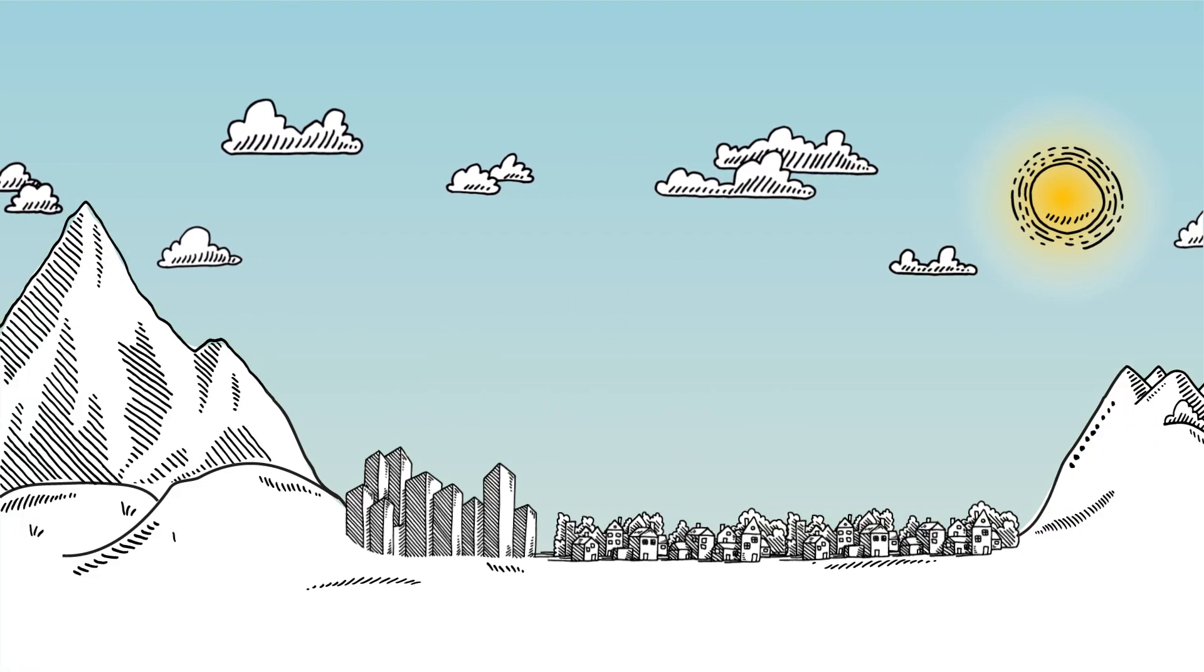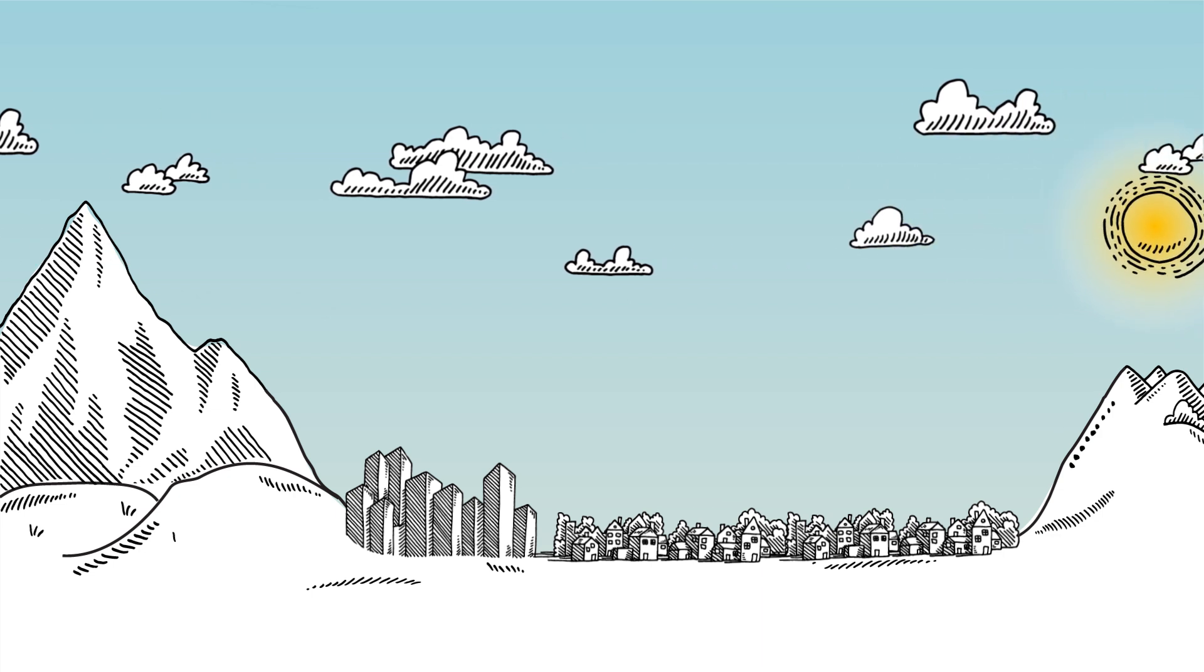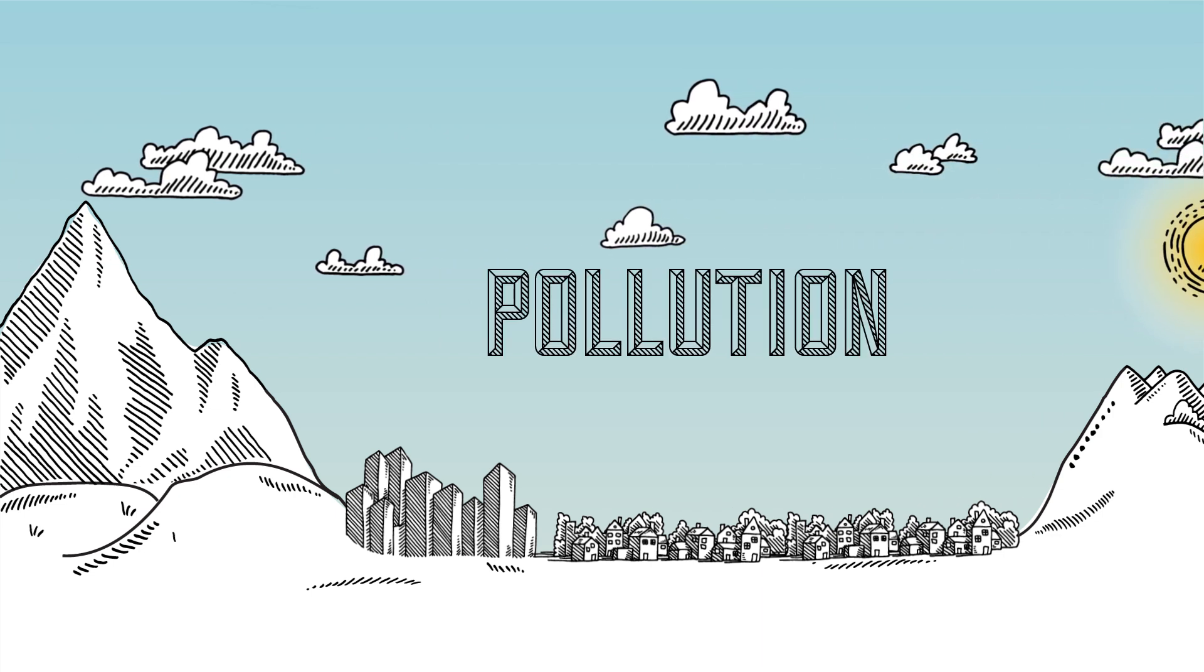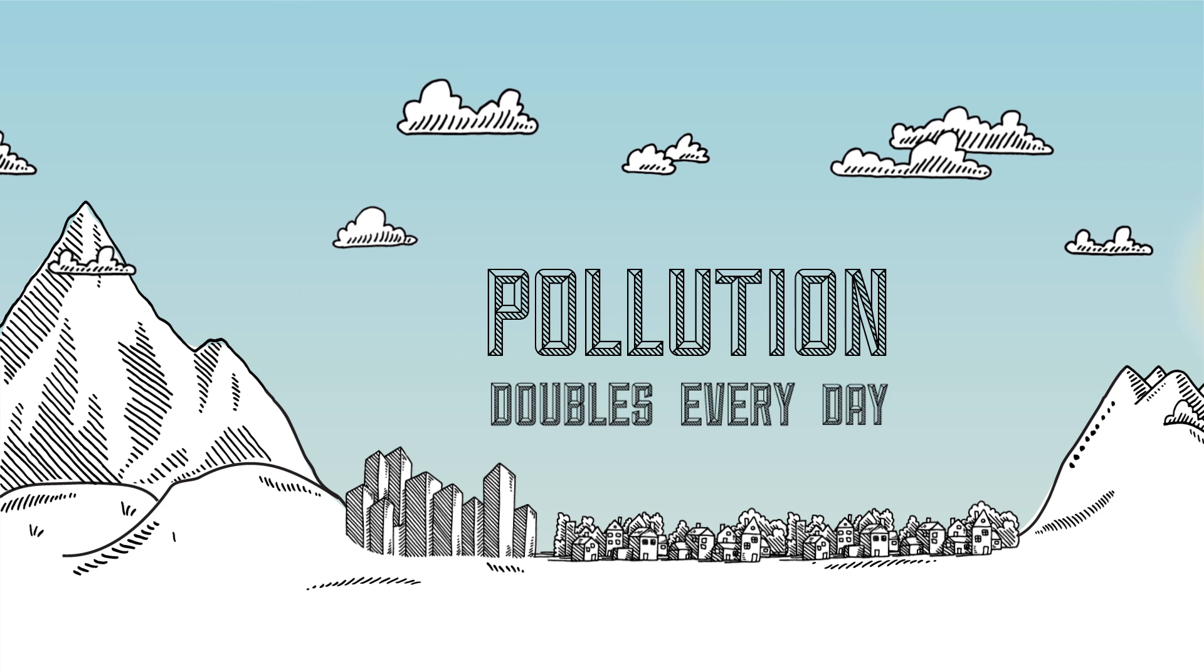What we can control are the emissions we release into the air. This becomes increasingly important as the amount of pollution in our air doubles every day during periods of inversion.